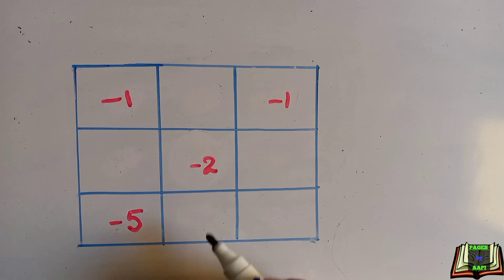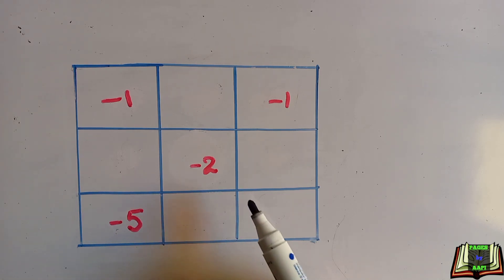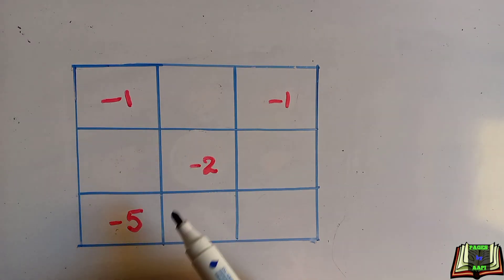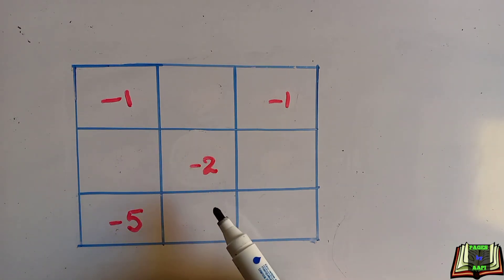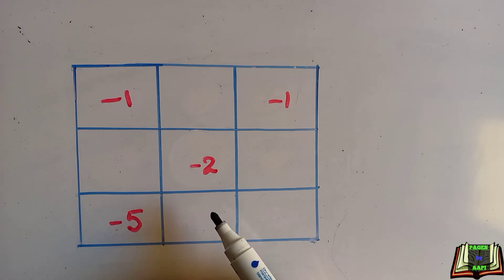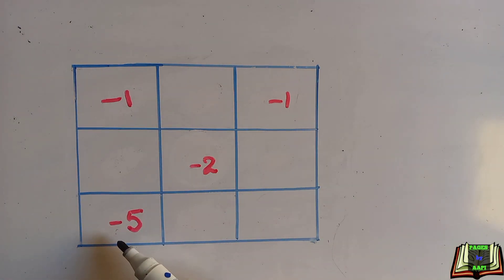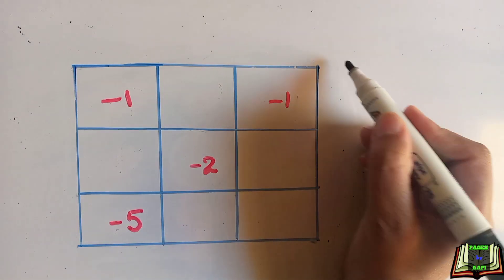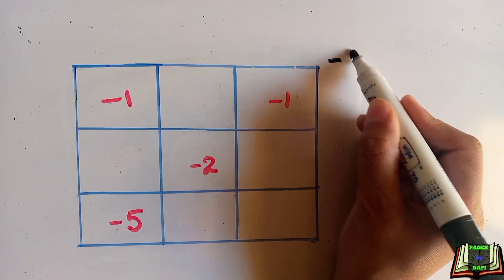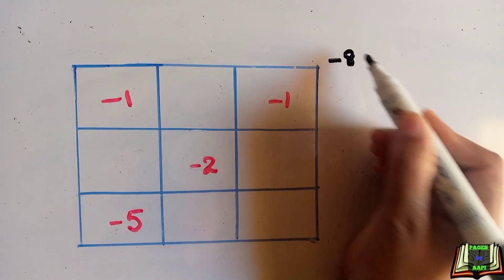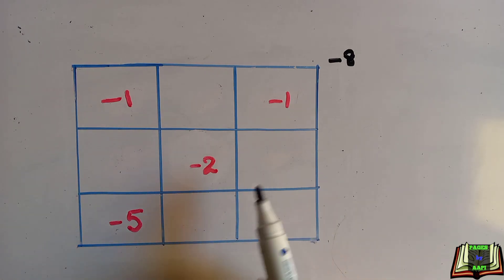Now in the next problem, a few numbers are already given and we have to find the rest. We will start solving the row, column, or diagonal that is already complete. We will start by solving this diagonal first — it adds up to minus 8.